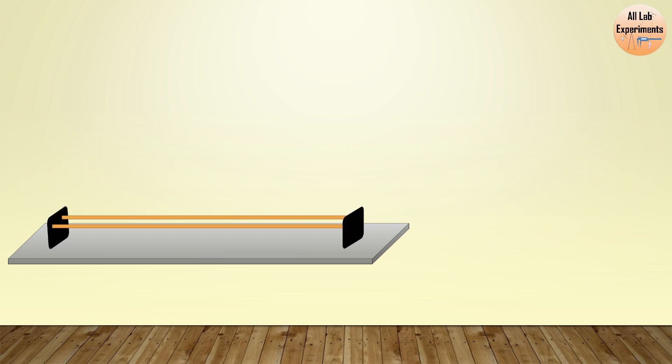On this we place one stand with a plate. On this plate we can use graph paper. Along with this we need a stand on which we can mount our diffraction grating. This is diffraction grating.